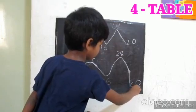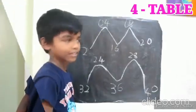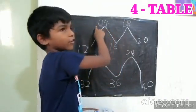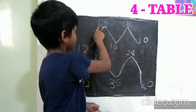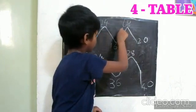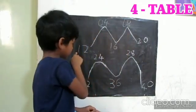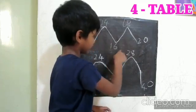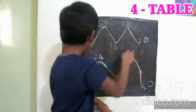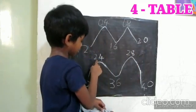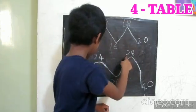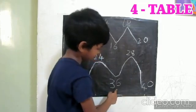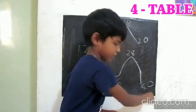Now the fourth row, 1 times 4 is 4, 2 times 4 is 8, 3 times 4 is 12, 4 times 4 is 16, 5 times 4 is 20, 6 times 4 is 24, 7 times 4 is 28, 8 times 4 is 32, 9 times 4 is 36, 10 times 4 is 40.